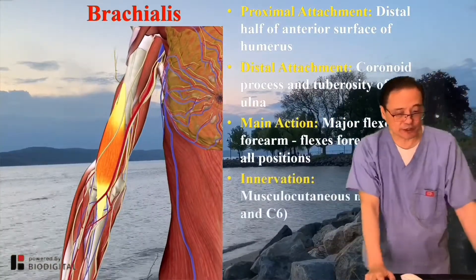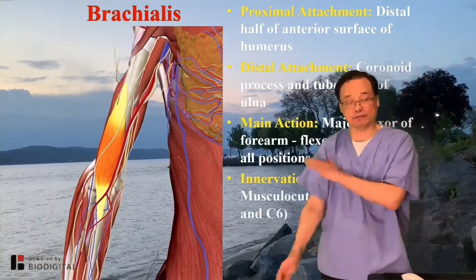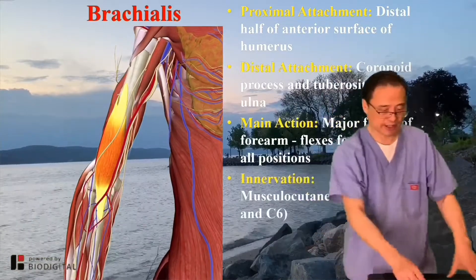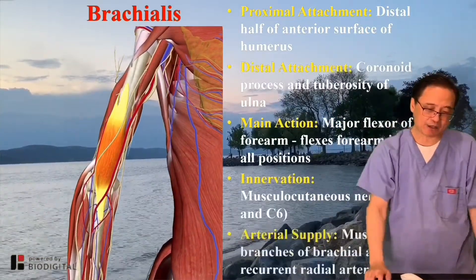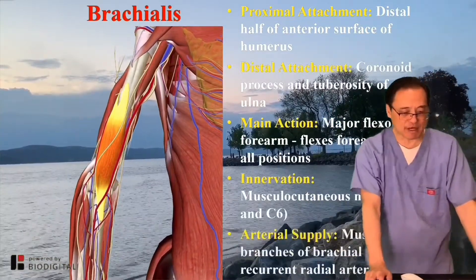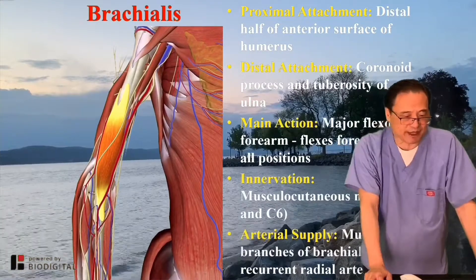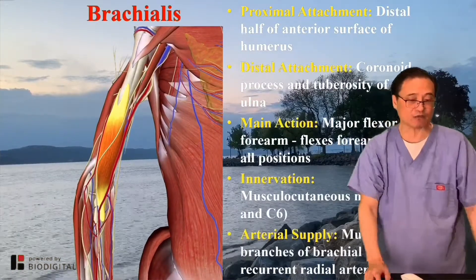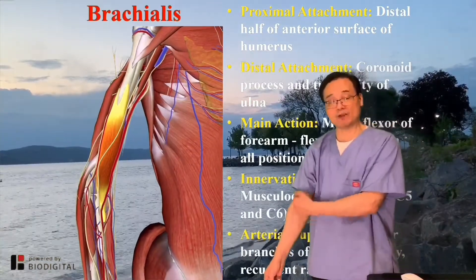Innervation: musculocutaneous nerve, because it's the anterior compartment — C5, C6. Arterial supply: muscular branches of the brachial artery, and the recurrent radial artery — basically right there.